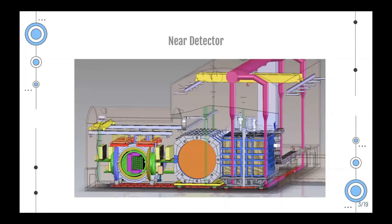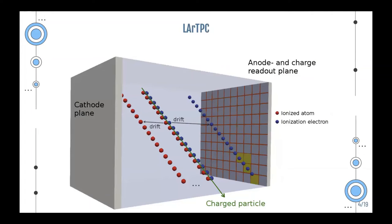The ND-LAr here is actually a liquid argon time projection chamber. When a neutrino or a muon interacts with an atom of argon, two phenomena take place: scintillation and ionization. Scintillation means the emission of light — hence my title — and ionization means electrons will be freed. Thanks to the application of an electric field, electrons will drift. They are detected by a charge readout, and since it is a time projection chamber, we can build a 3D trajectory of the particle after the interaction. That is possible because we have time-zero thanks to the light detection system.